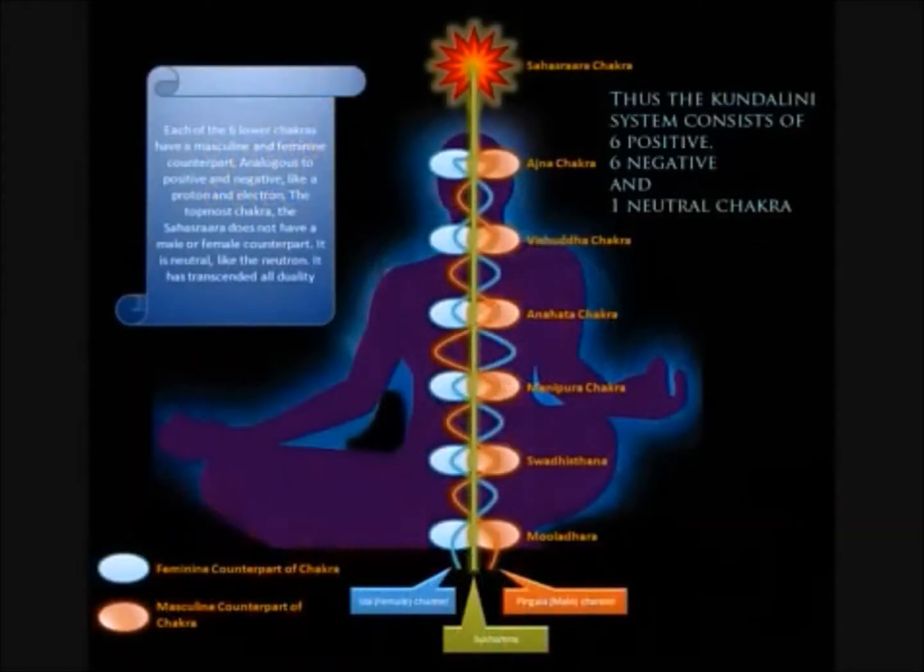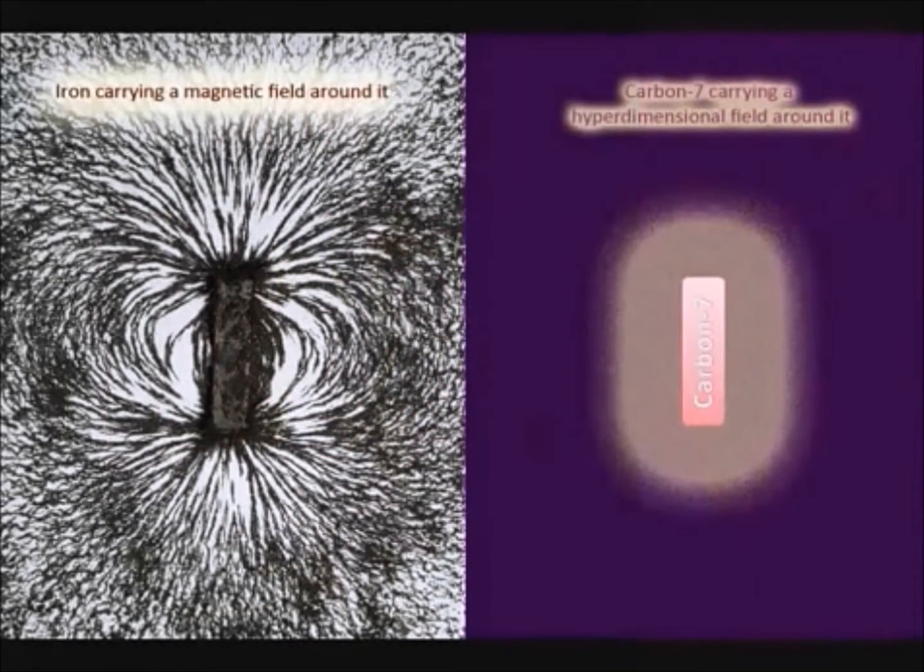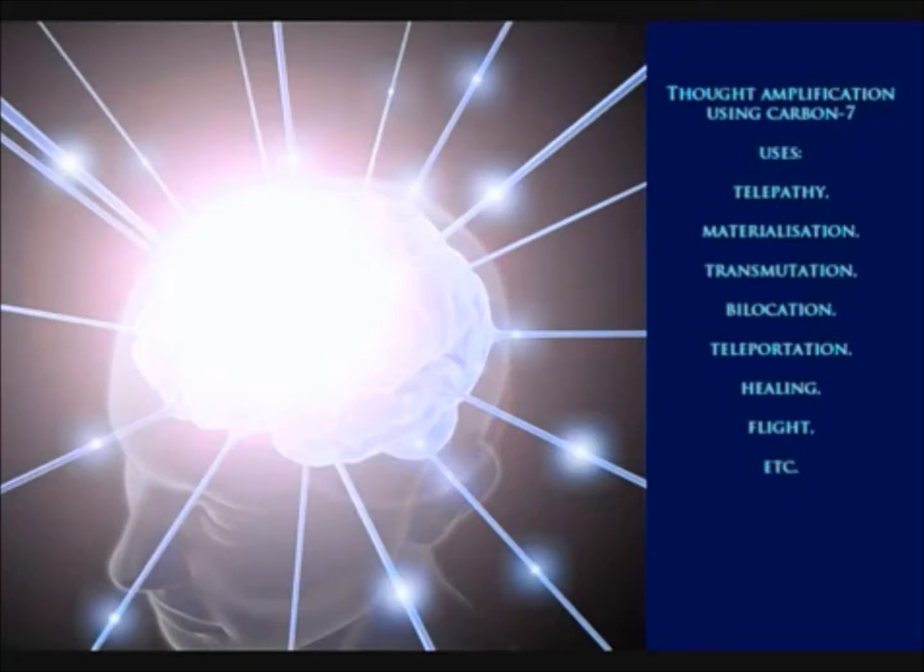It is the material equivalent of the Kundalini system as well as Metatron's cube. Like iron has the ability of sustaining a magnetic field around it, carbon-7 has the uncanny ability to carry hyperdimensional fields, such as fields of thought, around it. Thus it can amplify thought and other hyperdimensional fields, just as the iron and copper in a transformer can amplify magnetic fields.